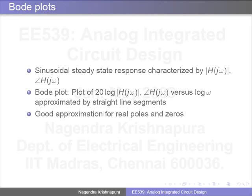Bode plots are another thing you should be familiar with. The sinusoidal steady-state response is characterized by the magnitude of H and the angle of H. In a Bode plot the regions are approximated using straight lines — either constant or slopes of ±20N dB per decade. This is a good approximation when you have real poles and zeros, which is the case we find most frequently in this course. Bode plots are something we will use as a matter of routine when analyzing circuits.